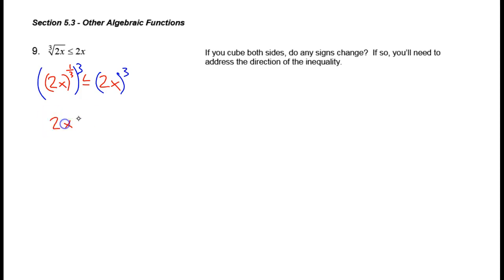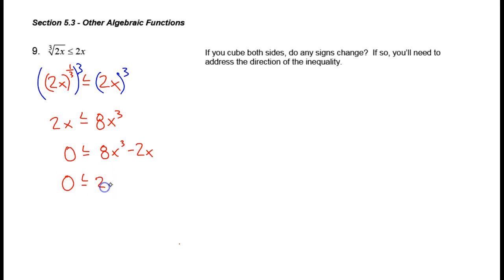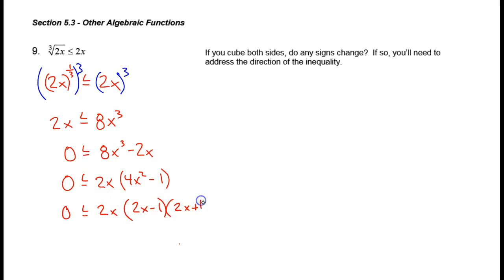So this becomes 2x is less than or equal to 2 cubed, which is 8, times x cubed. I want to solve for 0 on the left-hand side, so I'm going to subtract 2x from both sides. Now I have something I can factor: 0 is less than or equal to 2x times 4x squared minus 1. I can further factor that: 0 is less than or equal to 2x times 2x minus 1 times 2x plus 1. If you don't believe that 2x minus 1 times 2x plus 1 is the factored form of 4x squared minus 1, test it out and multiply them back together.